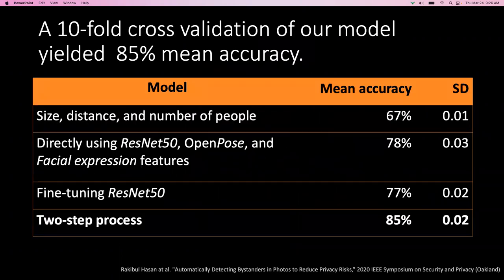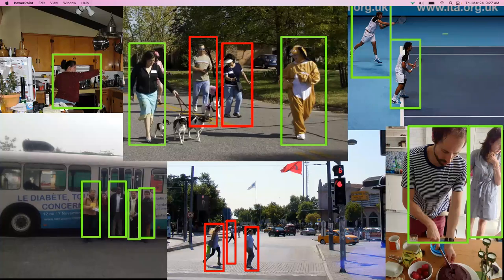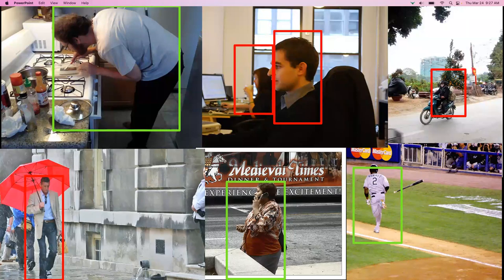We had many such models, applied them on images, and built a lower-level feature set about people in those images. We then computed statistical dependencies, mapping low-level features to intermediate features like pose, comfort, or intention. In the second step, we mapped these intermediate features to the classification question: is this person a subject or a bystander? Our two-step process achieved much higher accuracy compared to other models, including large deep learning models like ResNet.